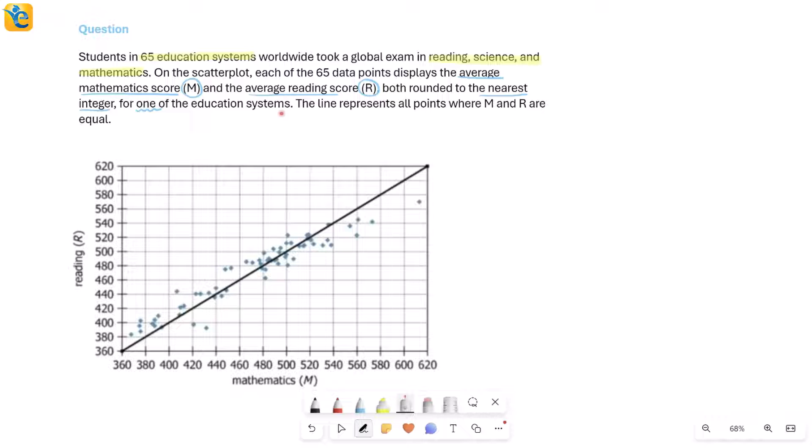Now what is it that we are reading for each dot, for each education system? We are reading two things: the average math score, which you can see here on the x-axis (mathematics M), and the average reading score R that you can see here on the y-axis label. So let's take one example to see how we're reading this.